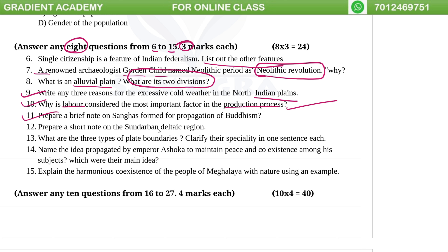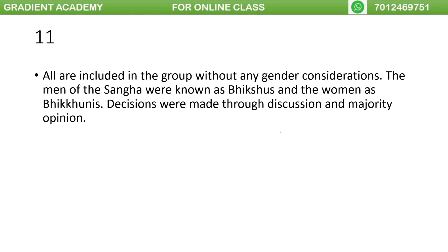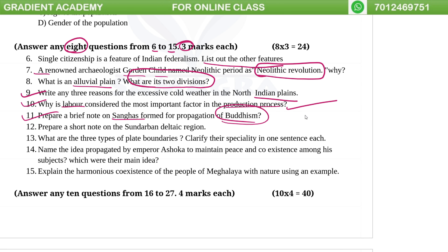Prepare a brief note on Sanghas formed for the propagation of Buddhism. The Sanghas were groups formed for propagating Buddhism. There were Bhikshus and Bhikkunis. This was a democratic form — they propagated Buddhism through discussion.